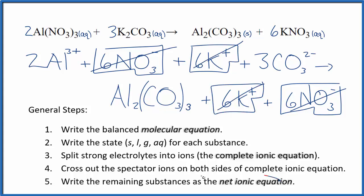What's left is the net ionic equation for aluminum nitrate plus potassium carbonate. I'll clean it up and write the states to have our net ionic equation.